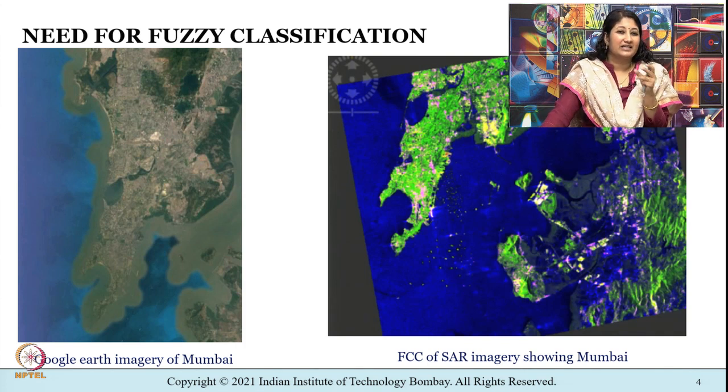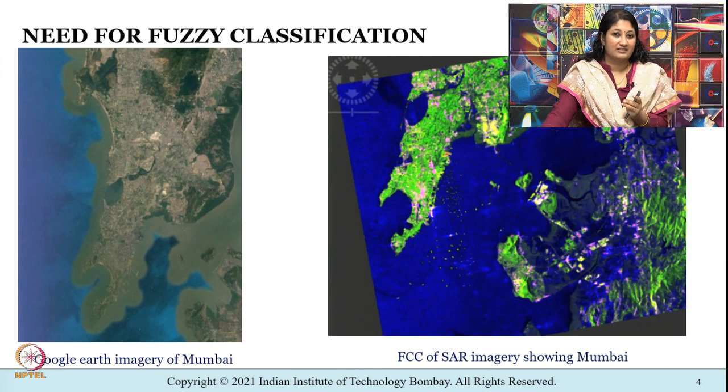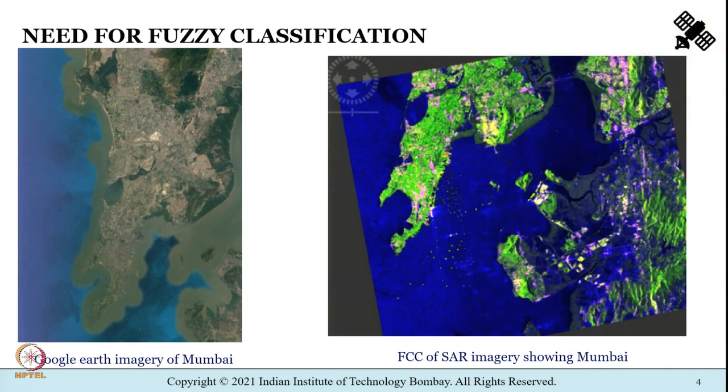For example, with maximum likelihood classification — one of the most widely used hard classifiers in remote sensing — each pixel is allocated to the class to which it has the highest posterior probability of membership. Each pixel's probability of belonging to each class is calculated, and the pixel is finally assigned to the class to which it has the highest probability. This falls under hard classification, because all these hard classification techniques rely on a probabilistic approach.